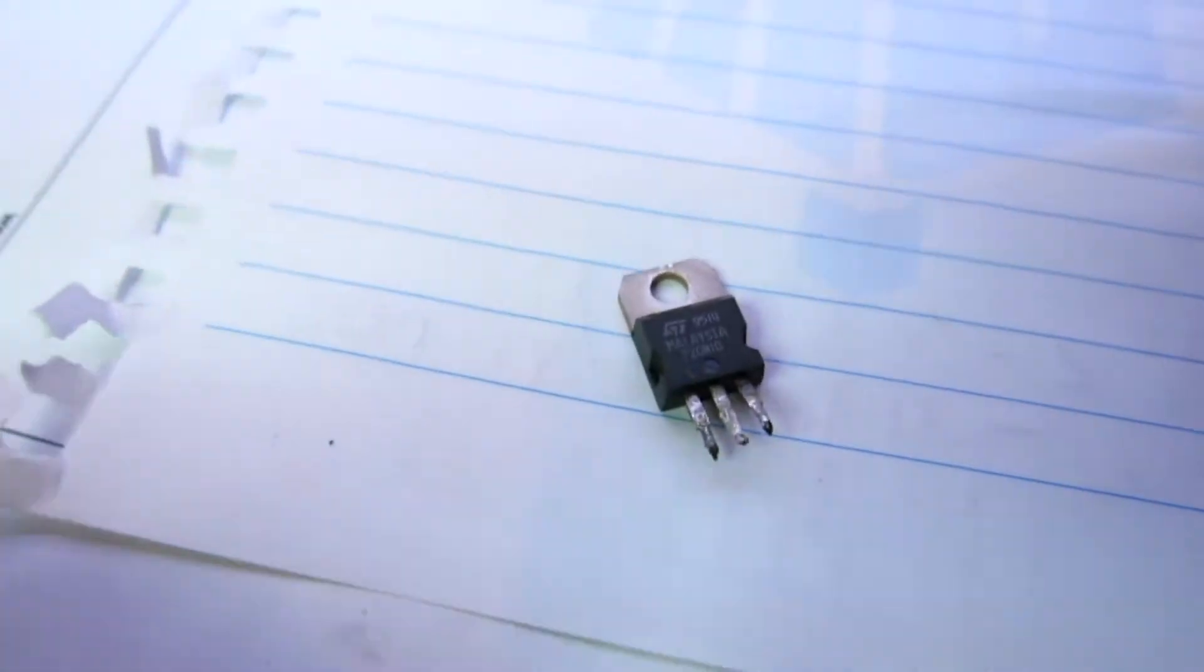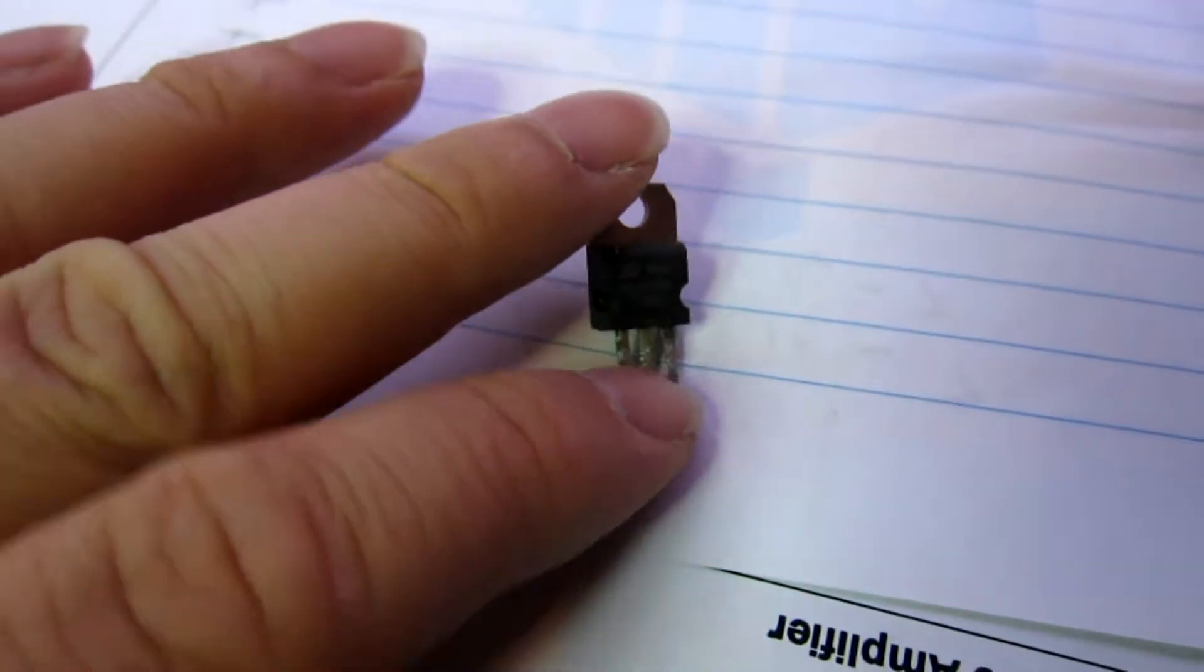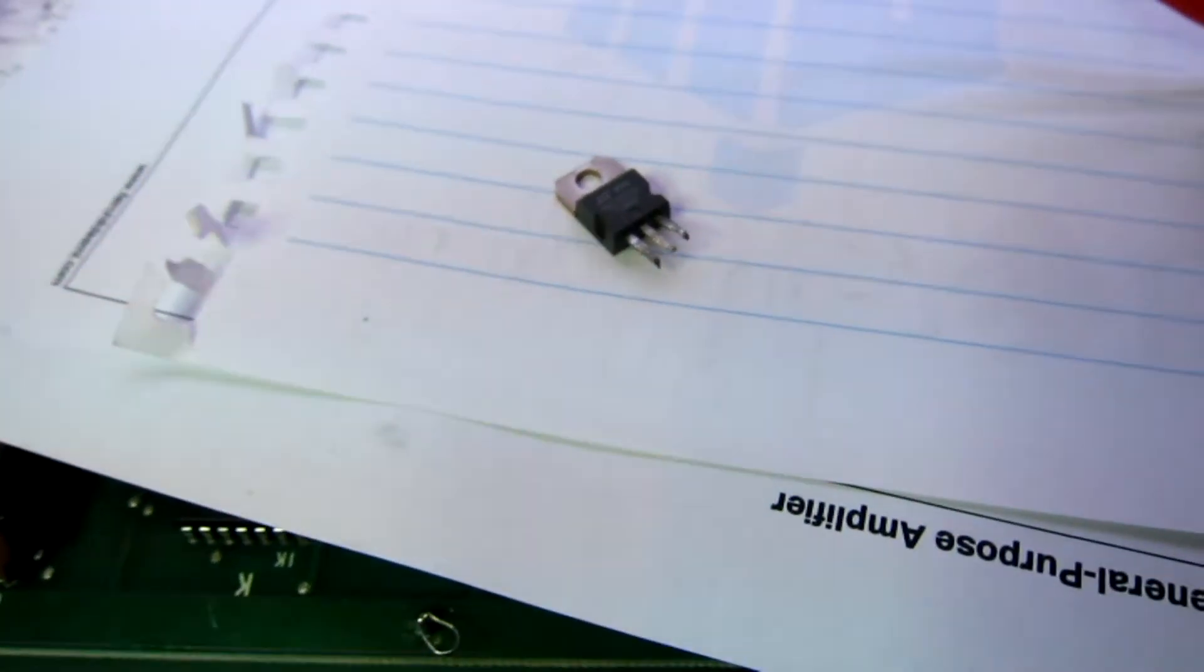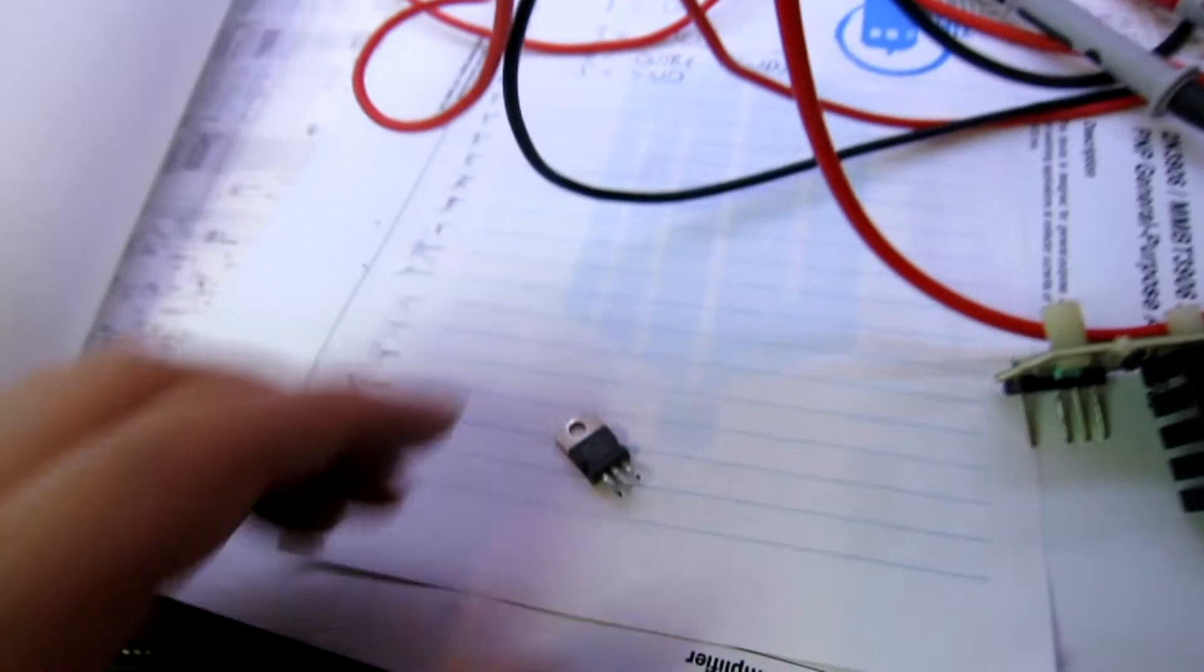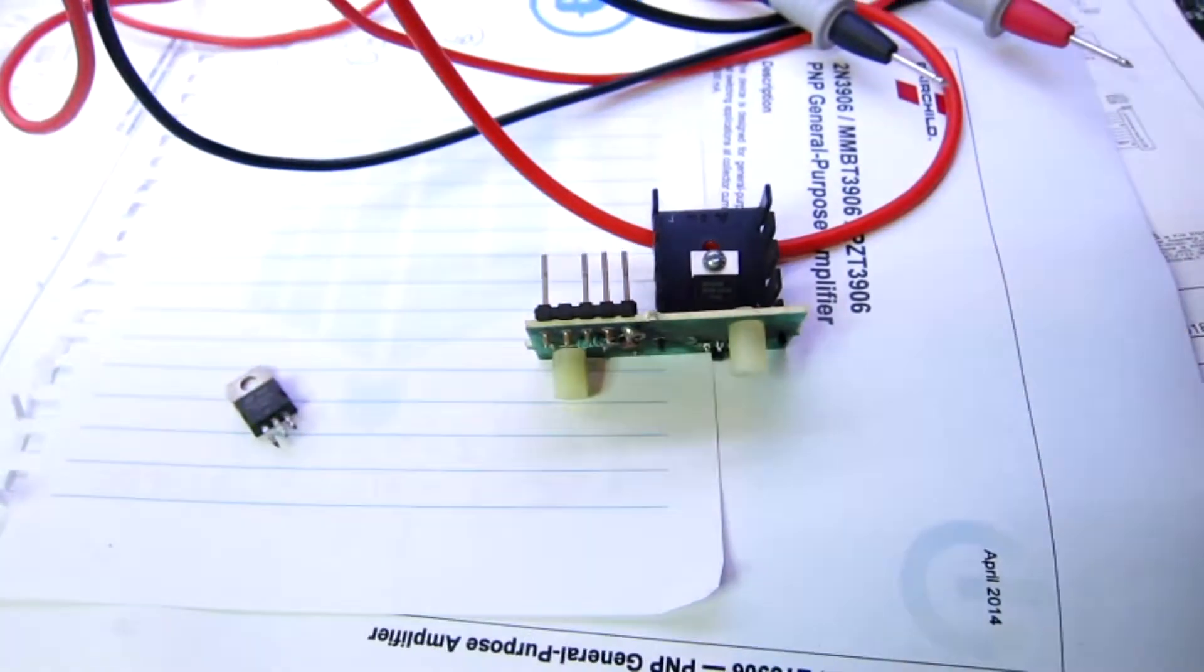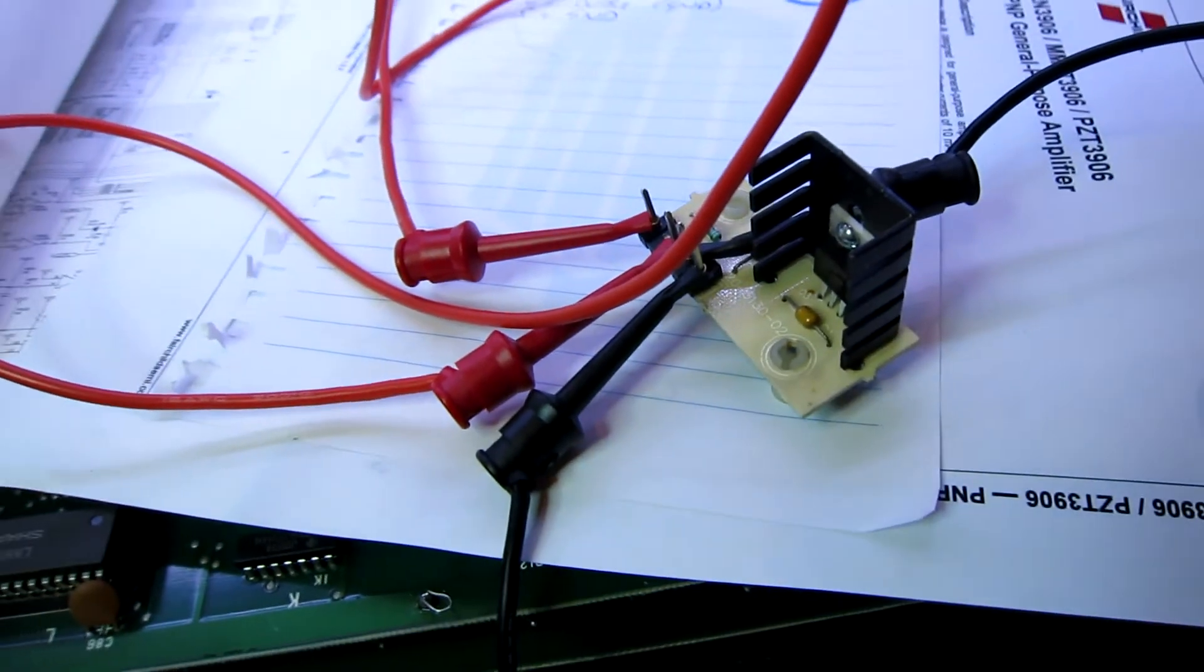So I went ahead and pulled the MOSFET and tested it out of circuit. Funny enough, we've got 86 ohms between gate and source, so that's going to be bad. Should be pretty high resistance. Stuck a new IRL540 in there. We're going to repeat the same test we did before.